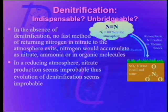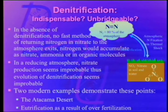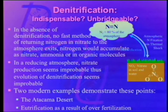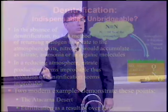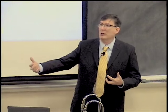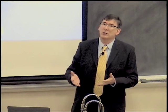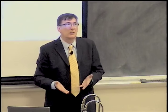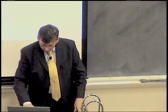Two modern examples demonstrate these points: the Atacama Desert where we see actual accumulation of nitrate, and eutrophication as a result of over-fertilization, where farmers put too much nitrogen on their crops, and a lot of it winds up washing into streams. Those streams ultimately get poisoned by it and the ecology breaks down. Atmospheric nitrogen fixation — thermal shock like lightning or combustion within engines — produces nitrogen oxides which ultimately produce nitrate. This is why nitrate can accumulate in places like the Atacama Desert. The nitrogen cycle is broken there — there aren't plants and bacteria growing there to have biological nitrogen fixation, but thermal shock still produces nitrate which precipitates out on the surface.